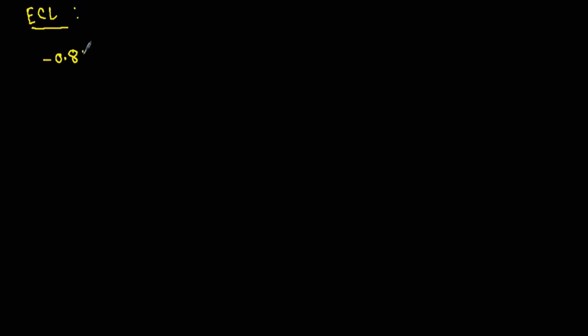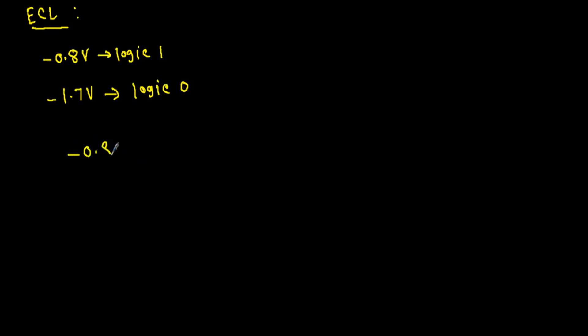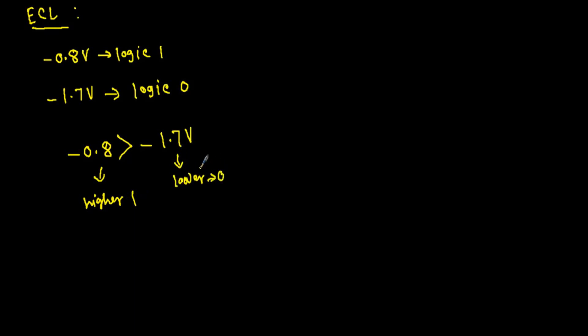Let me show you some practical logic systems. In case of an ECL circuit — emitter coupled logic family — we use minus 0.8 volt to represent logic one and minus 1.7 volt to represent logic zero. Now, minus 0.8 volt is obviously greater than minus 1.7 volt, so the higher voltage represents logic one and the lower voltage corresponds to logic zero. That means ECL circuits use positive logic.